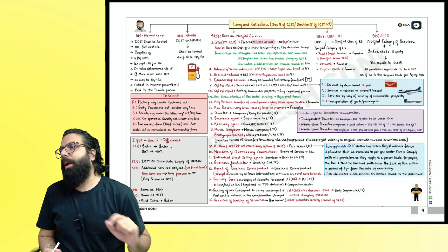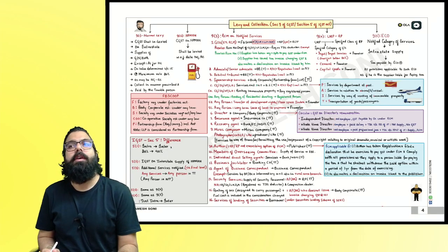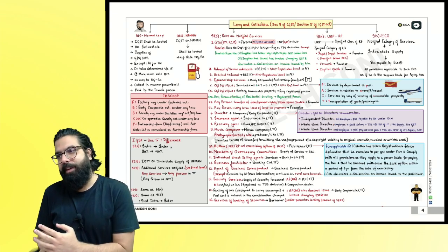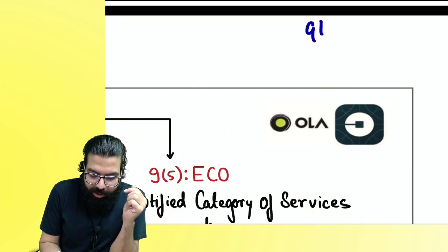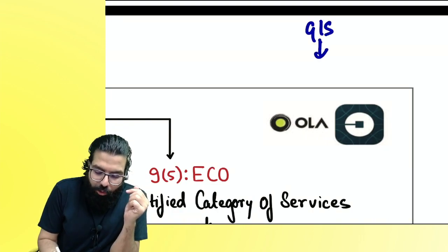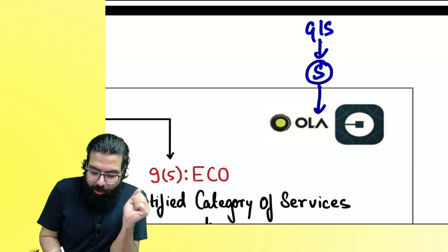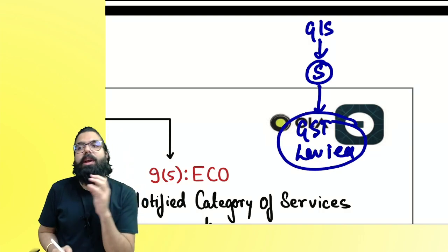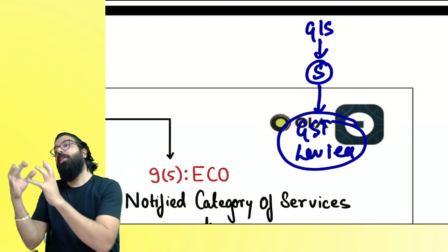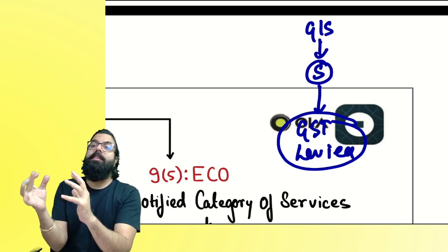Let's revise the next chart on charge of GST. We started learning GST with goods and services — whenever goods and services are supplied, GST will be levied. Whenever you talk about levy, CGST is levied under section 9, and IGST is levied under section 5.